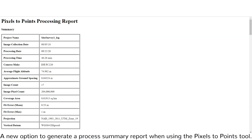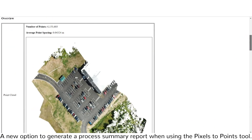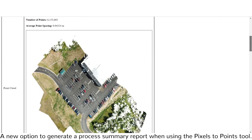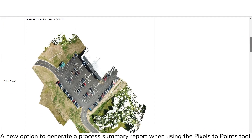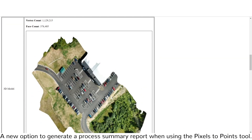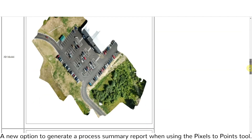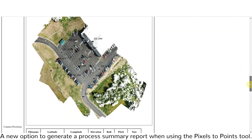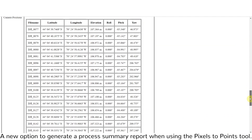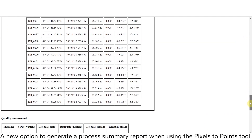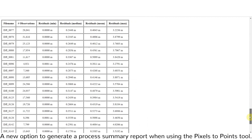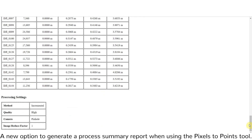The fourth feature is a new optional report for the pixels to points tool process. This report concisely summarizes the pertinent information from the data generation process. It includes a summary of input data, processing time, output data, quality assessment, as well as a visual representation of the individual output layers.